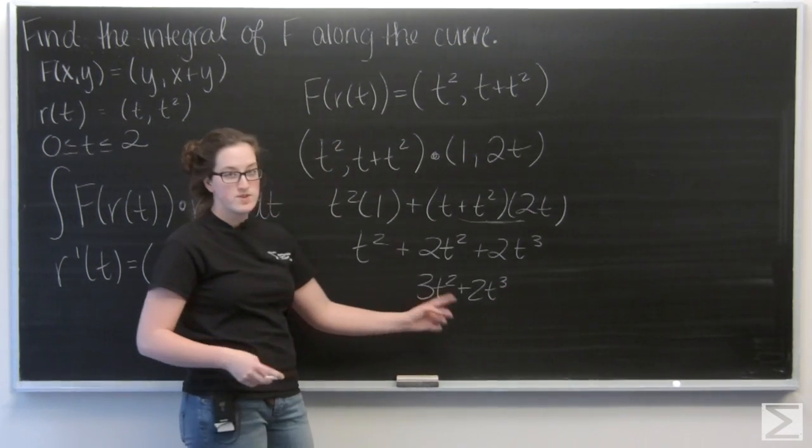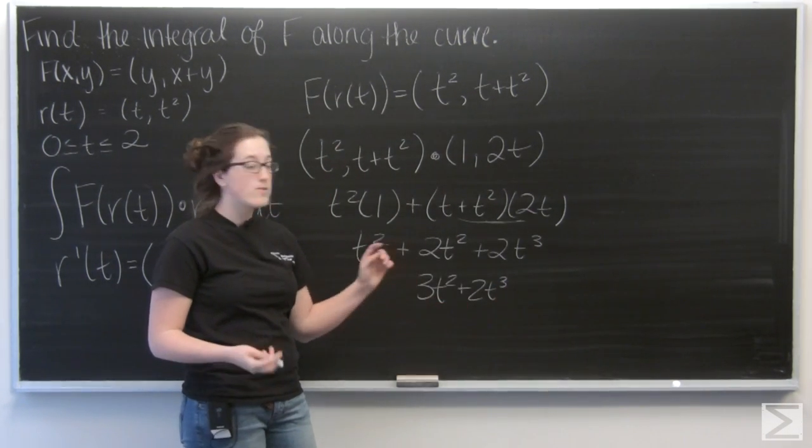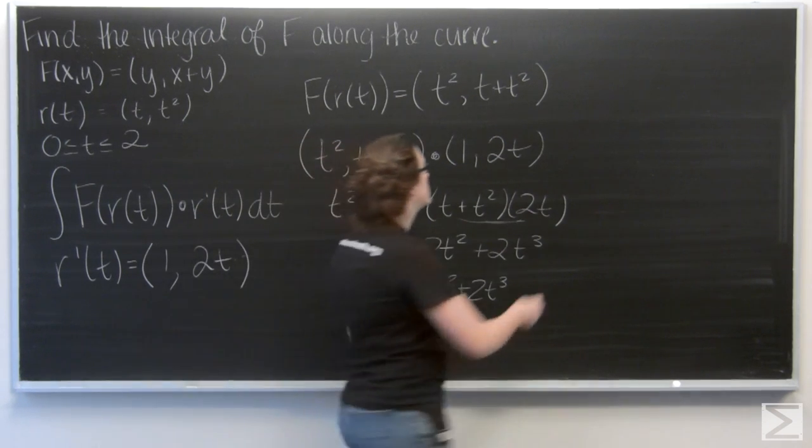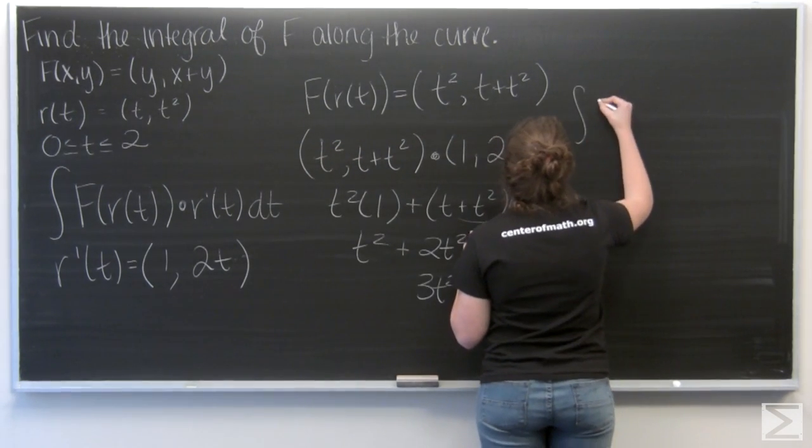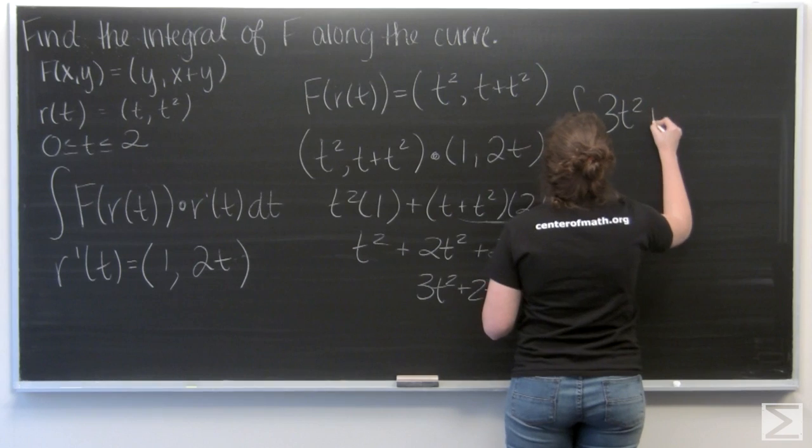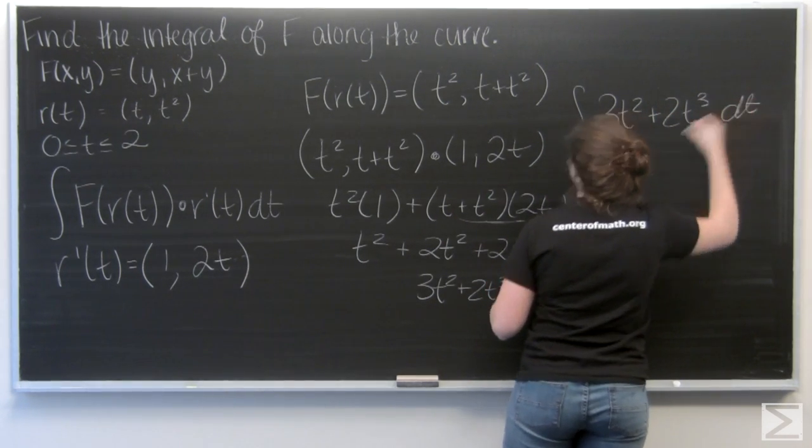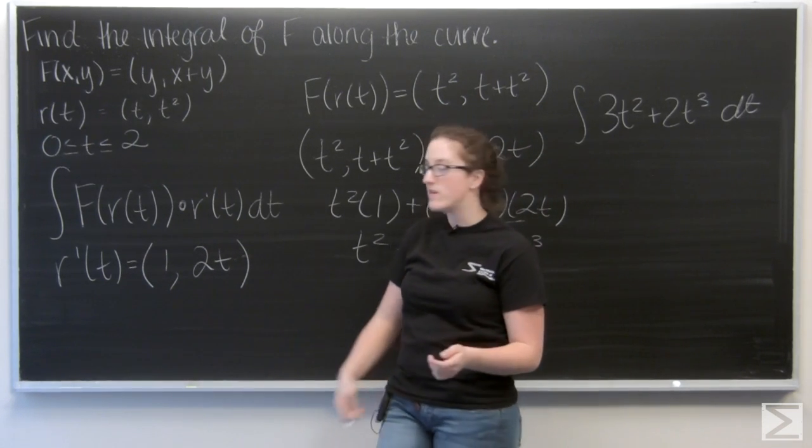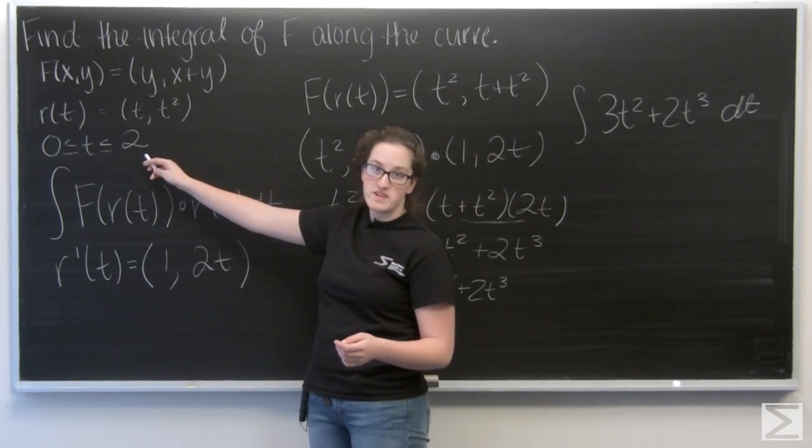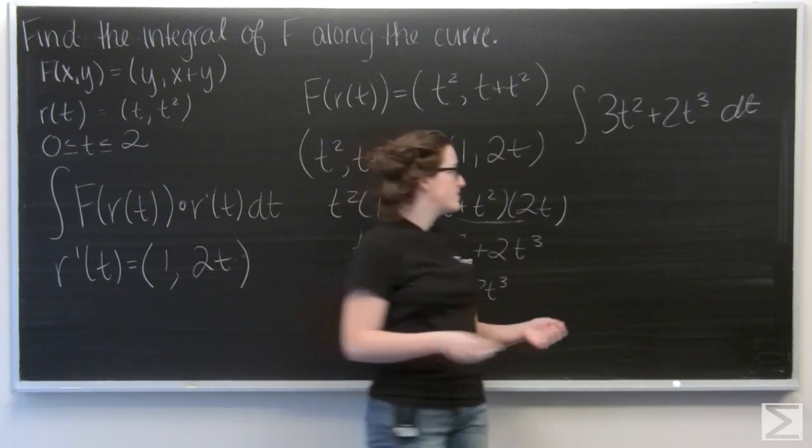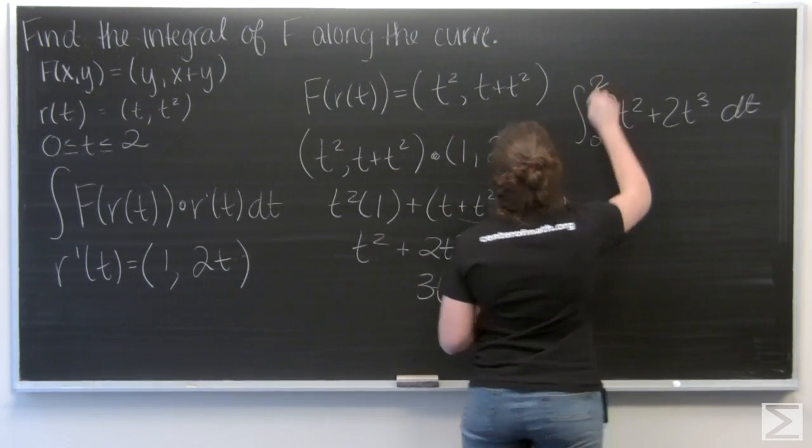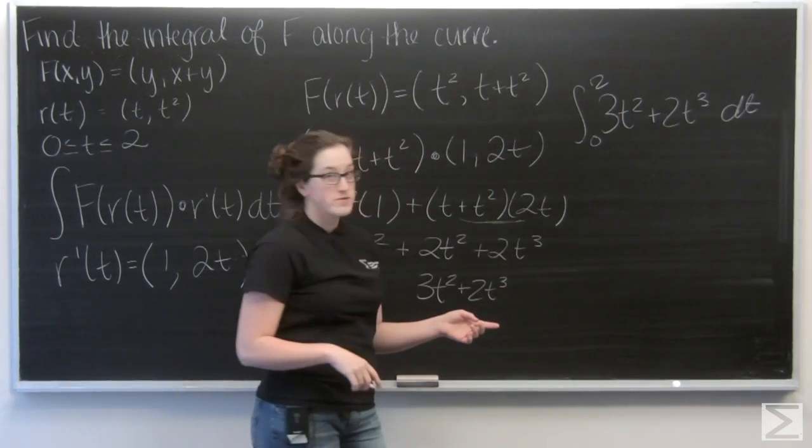So I have 3t squared plus 2t to the third. Now I want to integrate that. And I want a definite integral with this given interval of t, so from 0 to 2. And let's go ahead and integrate with respect to t.